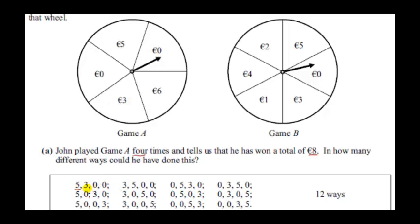Basically, we want to see how many different ways we can arrange four objects, given that two of them are the same. If all four objects were different, we would have four factorial different ways of arranging them — four ways for the first, three for the second, two for the third, and one for the fourth. Multiplying all those together gives us four factorial.